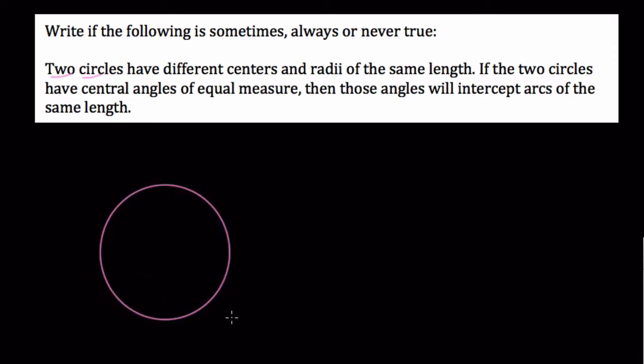That means we have two congruent circles. So if I have this circle here with a center, O let's call it, and a radius R.